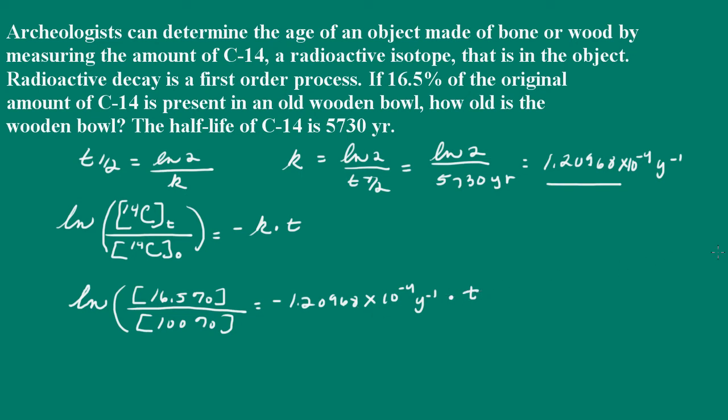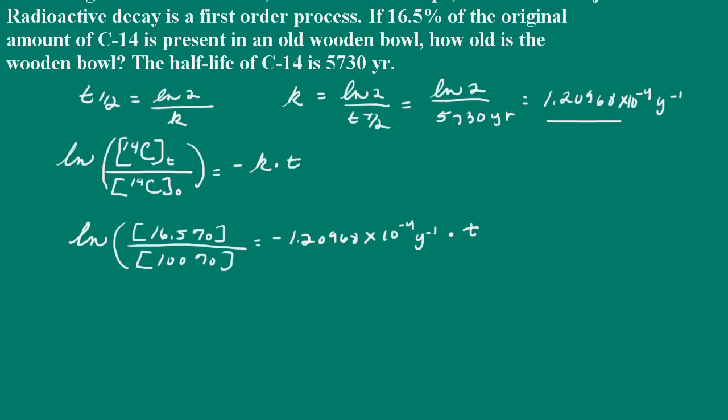So what we need to do here is solve the equation for t. They're asking us how old the wooden bowl is. So let's go ahead and solve this for t. So that's going to be, we have the 16.5% over the 100%. And that will be over 1.20968 times 10 to the negative 4 per year. And that will equal t.